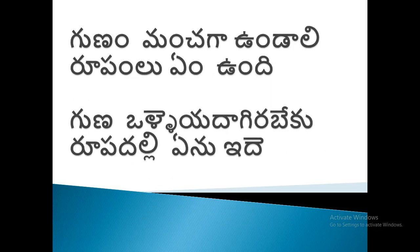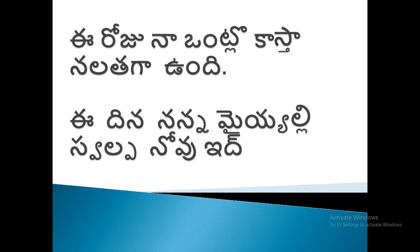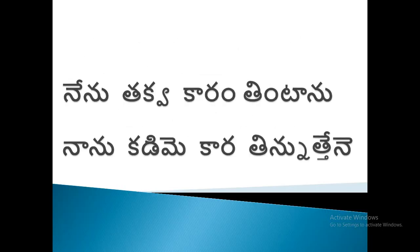ગુણમ મંચગા ઉંડાલી, રૂપમલુ એમ ઉંદી, ગુણમ ગુણમ ગુણમ મંચગા ઉંડાલી, વળળેદ આગીરબેકુ, મંચગા ઉંટલો કાસ્તા નલતગા ઉંદી ઈરોજુ. ઈદિન નણના ઉંટલો નિય કાસ્તા નલતગા નવુ ઉંદી, ઇદે ઈદિન ઈરોજુ.